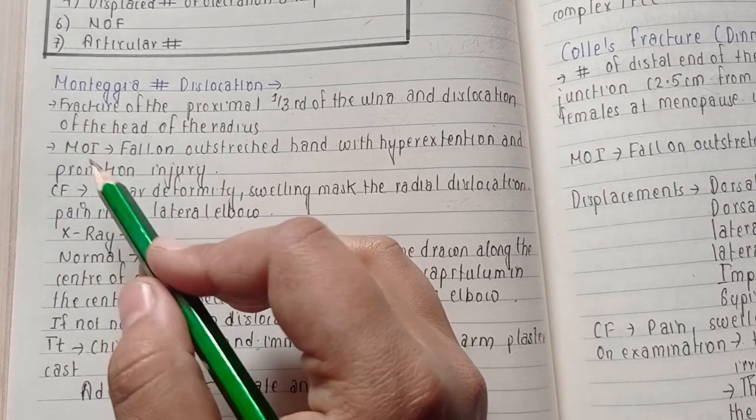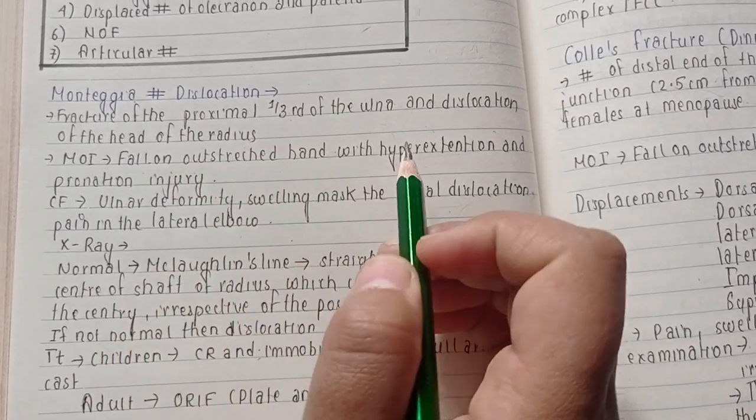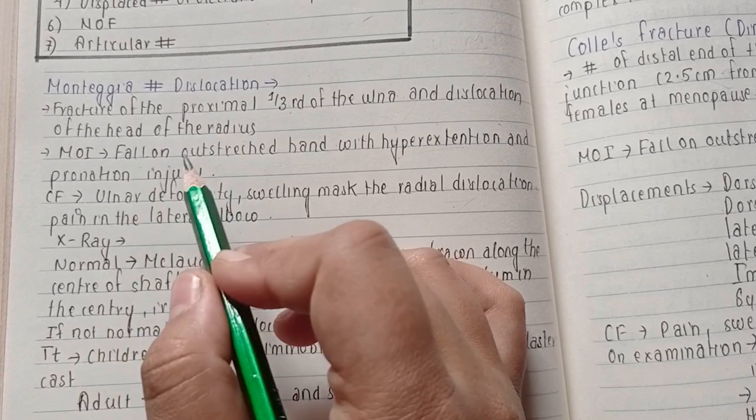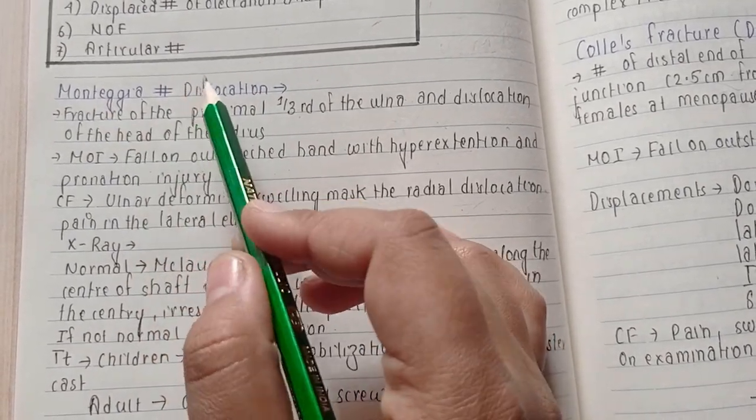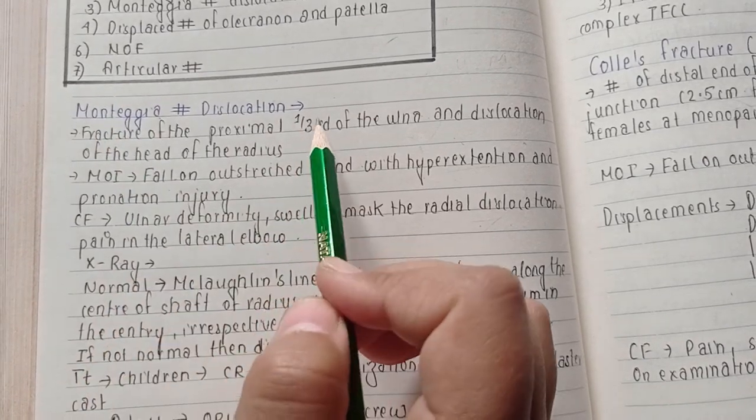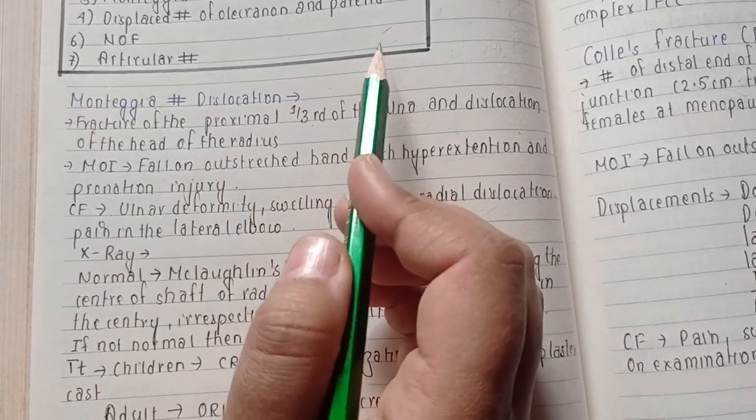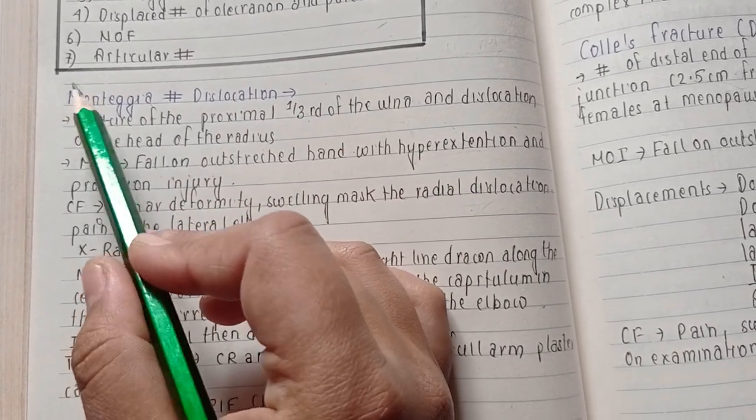What is the mode of injury? There is fall on outstretched hand with hyperextension and pronation injury. We can remember this fracture as our ulna lies on the medial side, and M for Monteggia fracture and M for medial side. So we'll have the fracture of the medial bone, which is ulna.